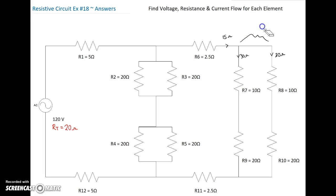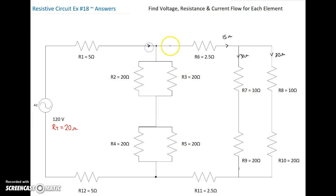So now we know that R7, R8, R9, and R10 are worth 15 ohms. In series with that, we have R6. This is all 15 ohms right here, so we've got 2.5 plus 15 plus another 2.5 before we get back to this junction. This junction is a parallel junction where current goes off in two different directions.